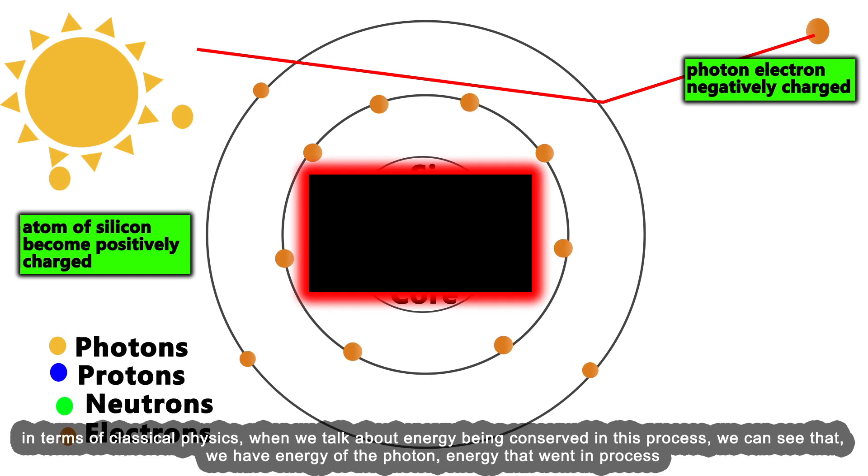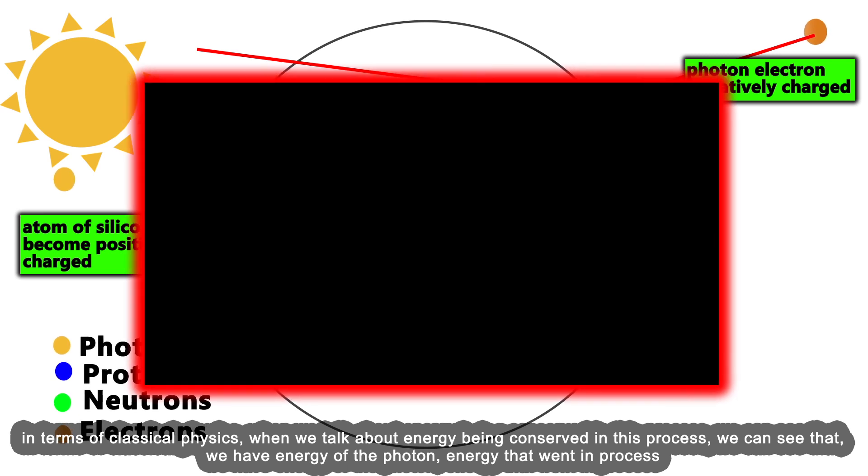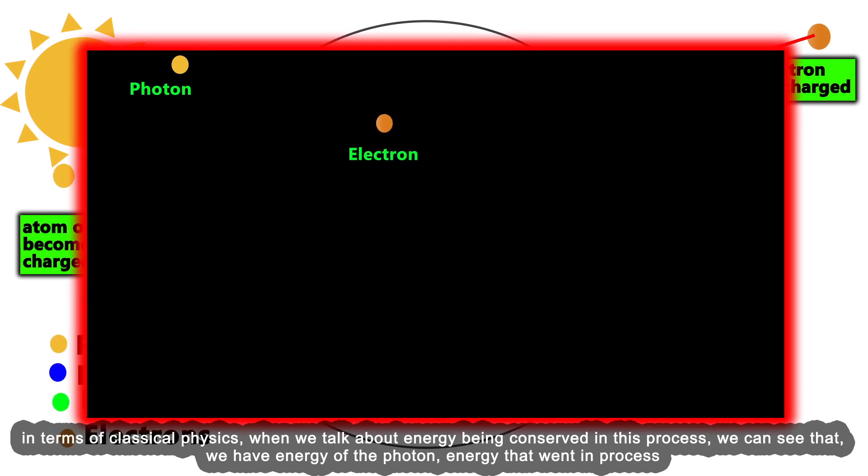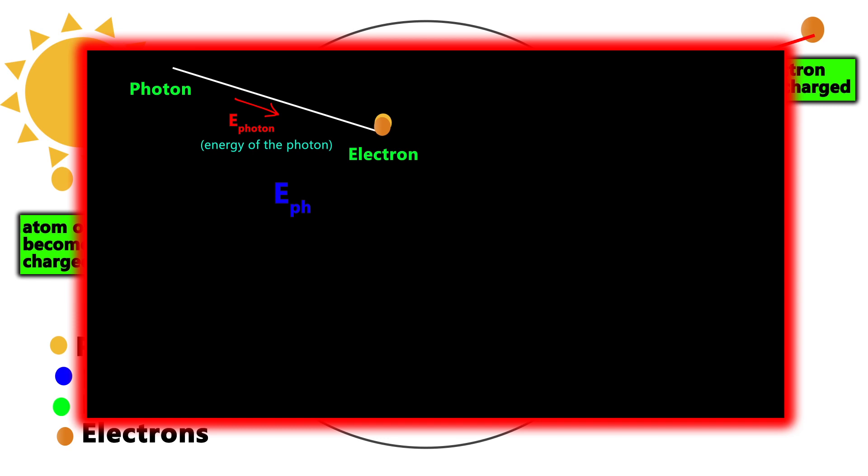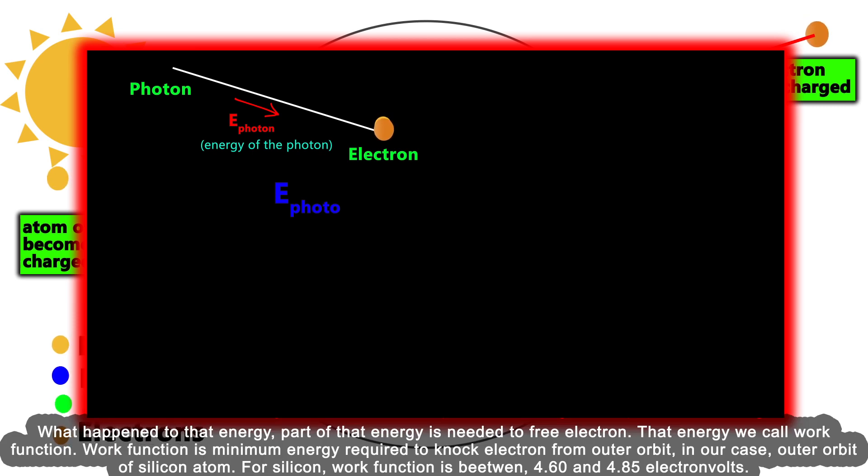In terms of classical physics, when we talk about energy being conserved in this process, we have the energy of the photon going into the process. Part of that energy is needed to free the electron; that energy we call the work function. The work function is the minimum energy required to knock an electron from the outer orbit.